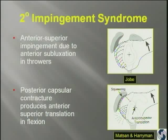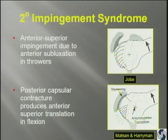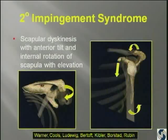Frank Jobe talked about anterior superior impingement because of anterior subluxation in throwers and the confusion with apprehension in his apprehension suppression or relocation test. Mattson and Harriman also talked about posterior capsular contracture producing anterior superior translation, but they discussed it only in flexion.